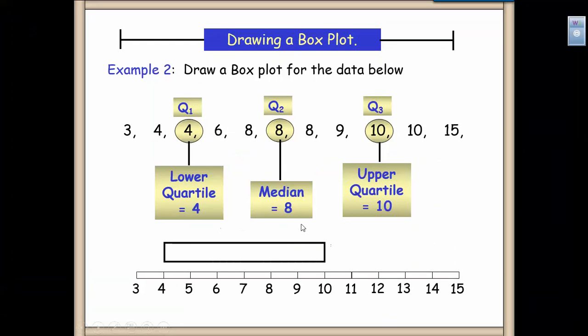So these three values will form my box. I have eight for my median, four for my lower quartile, and 10 for my upper quartile. Next, we're just going to draw a whisker out to the smallest value and another whisker out to the largest value, which is 15. So here we formed our box plot for this set of data.